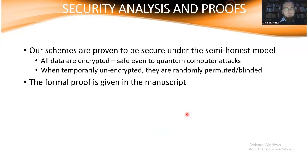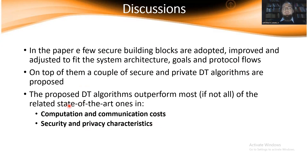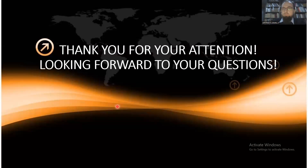Security analysis shows our schemes are secure under the semi-honest model and resilient to quantum computer attacks, since the underlying somewhat homomorphic encryption is based on ring LWE which is quantum-resistant. In summary, this paper proposes improved secure building blocks and novel secure and private decision tree evaluation algorithms that outperform state-of-the-art schemes — exclusively those dealing with secure and private decision tree evaluation — in computation, communication costs, and security and privacy characteristics. Thank you for your attention.